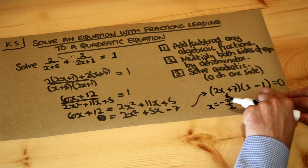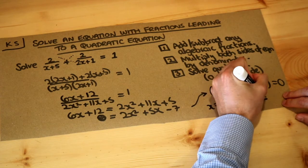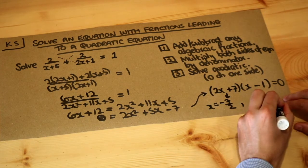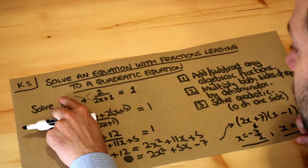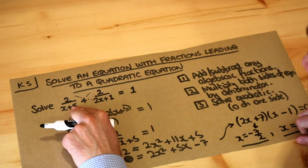Let's just check those. If we use the 1 in this equation, we get 2 over (1 + 5), which is 2 over 6, that's a third, and 2 over (2 + 1), that's two-thirds.